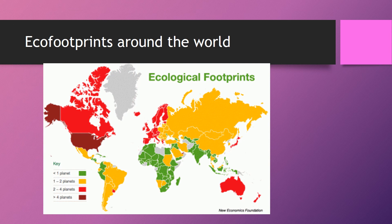Another way of measuring ecological footprints is to look at how many planets you would need if everyone in a country kept using resources at their current rate. Australia would need two to four planets, and we only have one. For parts of America, if people kept using resources and wasting without recycling, they would need more than four planets to meet everything their population needs.